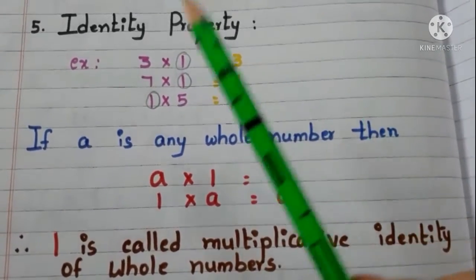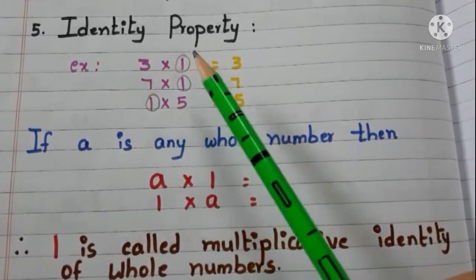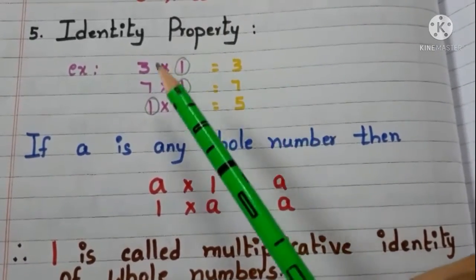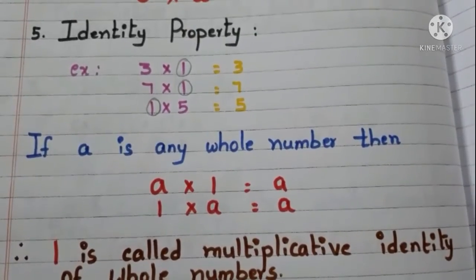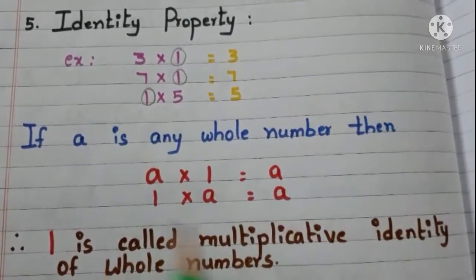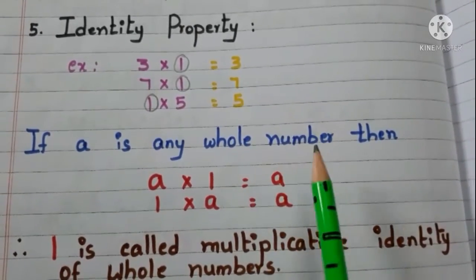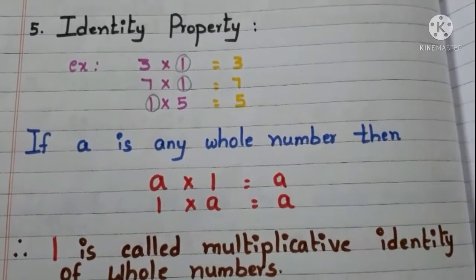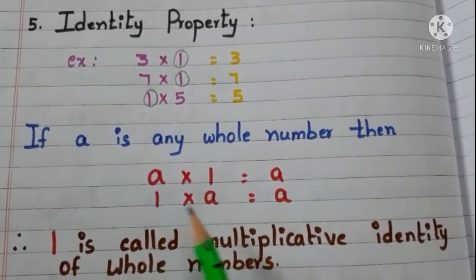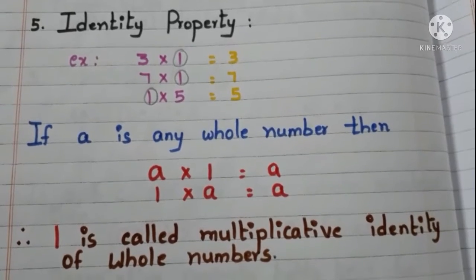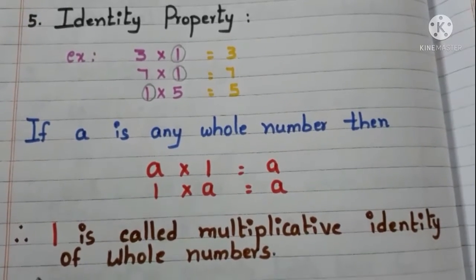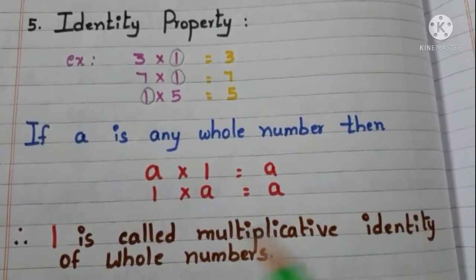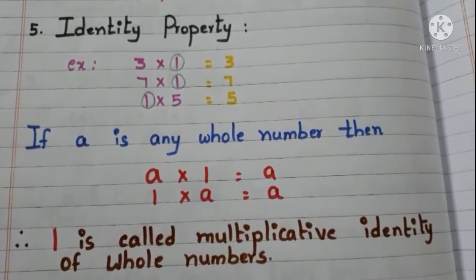See here, when we are multiplying a whole number with 1, we are getting the result as that whole number itself. Let us say, if A is any whole number, then A into 1 is equal to A, or else 1 into A is equal to A. Therefore, 1 is called the multiplicative identity of whole numbers.